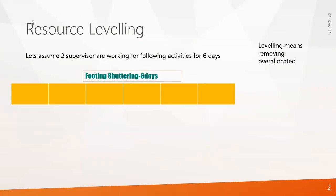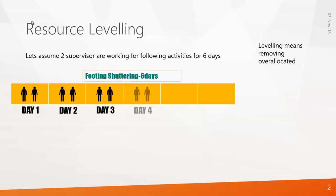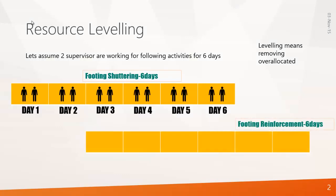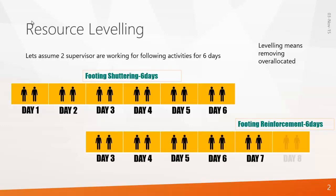In this example, we have an activity called footing shuttering, which is of 6 days where 2 supervisors are working per day — day 1, 2, 3, 4, 5, and 6. From day 3, another activity starts: putting reinforcement, again for 6 days, with 2 supervisors working per day. Also, in our company, we can supply a maximum of 2 supervisors per day.